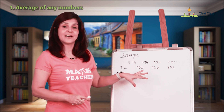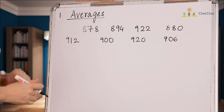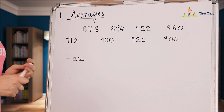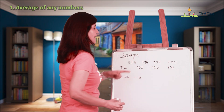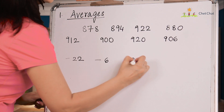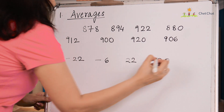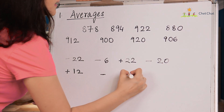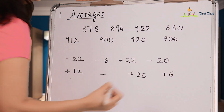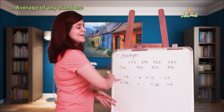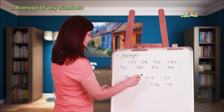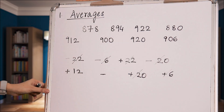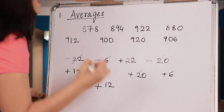Subtract 900 from each number: 878 − 900 = −22, 894 − 900 = −6, 922 − 900 = +22, 880 − 900 = −20, 912 − 900 = +12, 900 − 900 = 0, then +20 and +6. Now add up all these differences. Notice these pairs cancel out: −22 and +22, −20 and +20, −6 and +6, leaving us with +12.